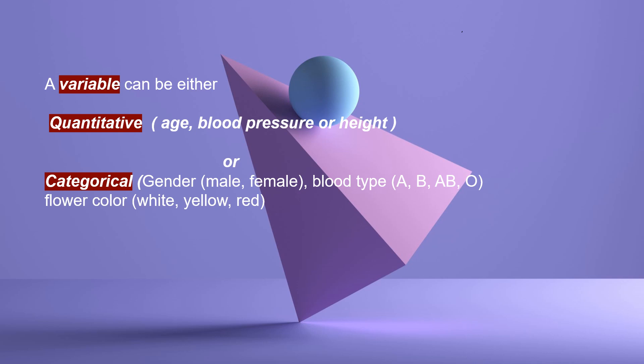Individuals are objects described by a set of data. Individuals may be people, animals, or things. A variable is any one characteristic of an individual. It can take different values for different individuals. The variable can be either quantitative, like age, blood pressure, or height, or it can be categorical, for example, blood type or gender.